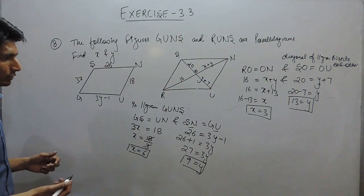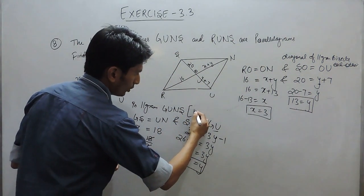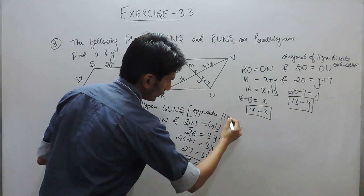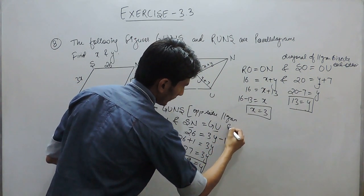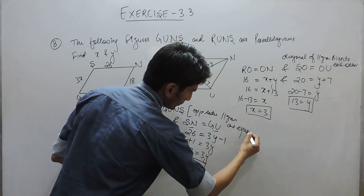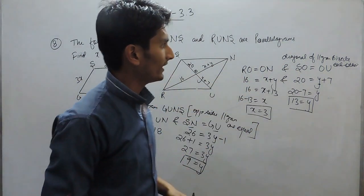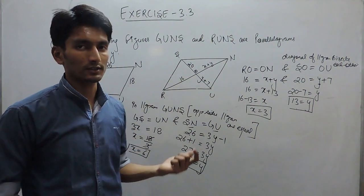In first question, we use the property: opposite sides of a parallelogram are equal. And in second question, we use the property: the diagonals of a parallelogram bisect each other.